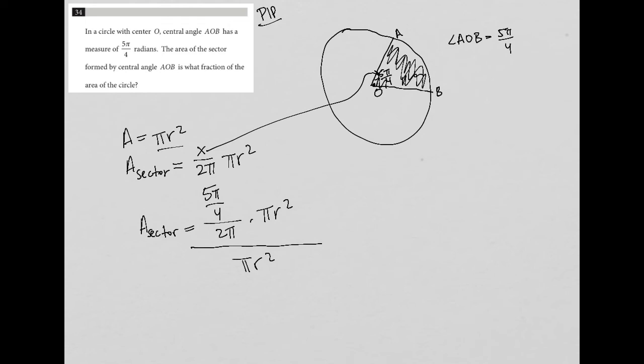So when I start to simplify this, this πr² and this πr² immediately cancel. So all I'm left with is 5π/4. And then instead of writing over 2π, I'm going to write it as a horizontal division problem.